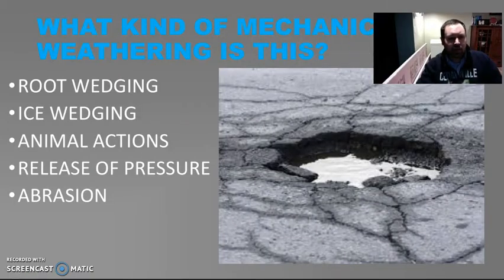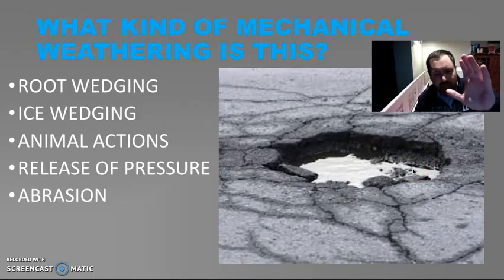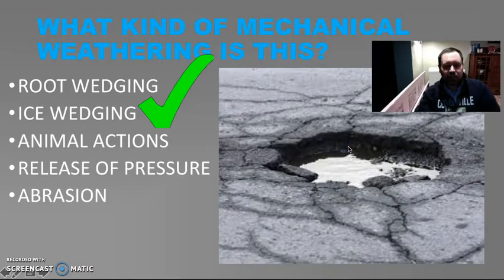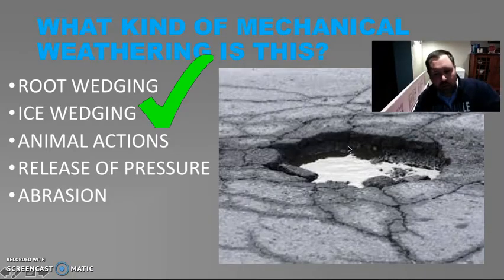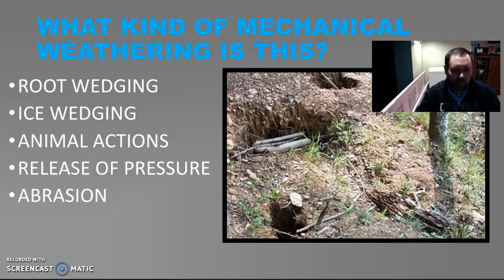What kind of mechanical weathering is this? Here we've got a mud puddle with water in it. I have a feeling this is during the wintertime — there's going to be some freezing and thawing. What kind of mechanical weathering is this? Yep, it's ice wedging. This happens all over Ohio during the wintertime and the springtime as things freeze and thaw, freeze and thaw. It makes larger potholes.